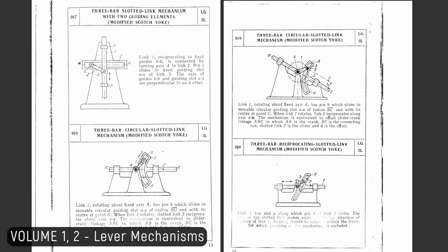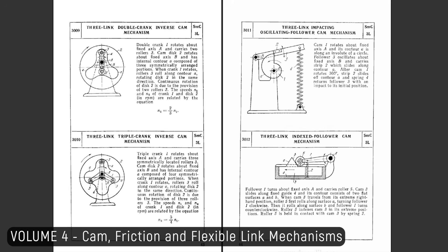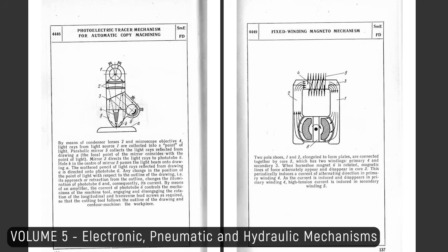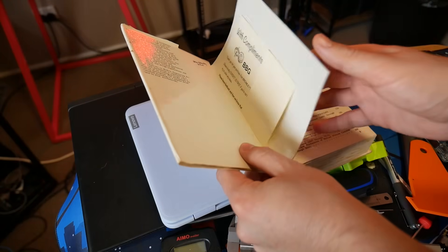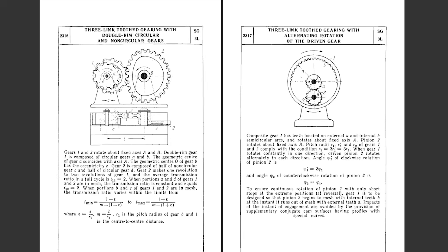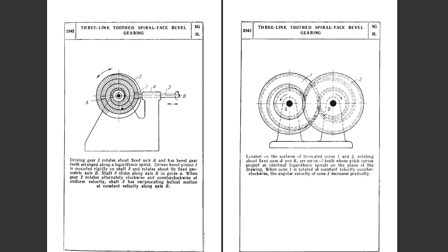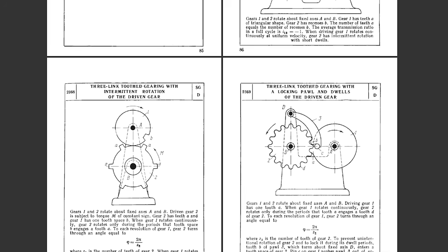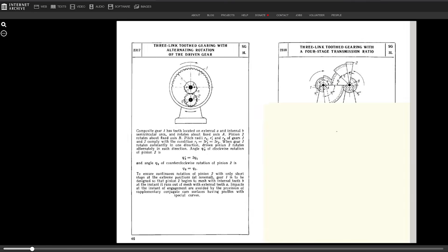There are seven volumes in total. Volumes one and two cover lever mechanisms. Volume three covers geared mechanisms. Volume four covers cam, friction, and flexible link mechanisms. Volume five covers more complex pneumatic and electronic mechanisms, as well as hydraulics. Out of all the books, it is volume three that is a true wonder — so important to me that I scoured the internet to find a hard copy at great expense. It covers irregular gear trains, reciprocating mechanisms, mechanisms which transcribe spirals, permutations of Geneva mechanisms, and so much more. Seriously, this book is something special, and there is a scanned copy available on archive.org.